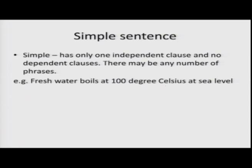For example: 'Fresh water boils at 100 degree Celsius at sea level.' This has only one independent clause because there is only one verb — 'boils' — which is a proper verb with tense. It is not a participial. There is no other verb. However, there are many phrases: 'at 100 degree Celsius' is one phrase, 'at sea level' is another phrase. But the sentence has only one independent clause, so this is a simple sentence.